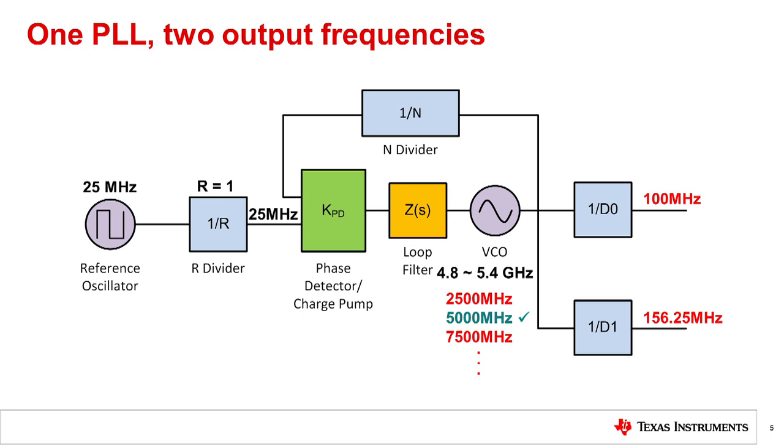In order to generate two frequencies from one PLL, the VCO frequency needs to be the common multiple of both outputs. If we list the common multiples of 100 MHz and 156.25 MHz, only 5 GHz falls within the VCO frequency range. Therefore, VCO frequency is 5 GHz, output divider D0 is 50, output divider D1 is 32, and the N divider is 200.